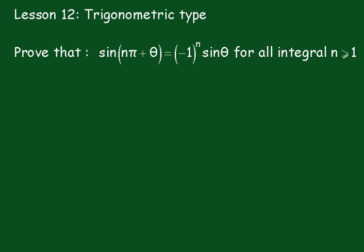Lesson 12, trigonometric type. Prove that the sine of n pi plus theta equals minus 1 to the n, sine theta, for all integral n greater than or equal to 1.